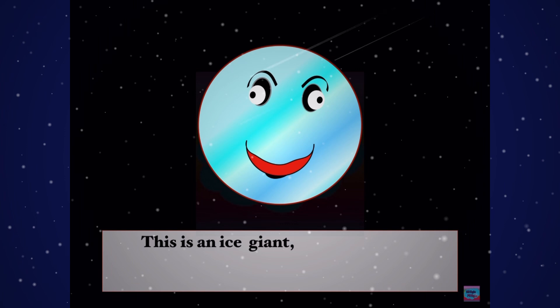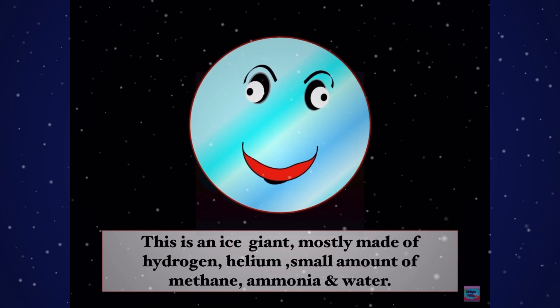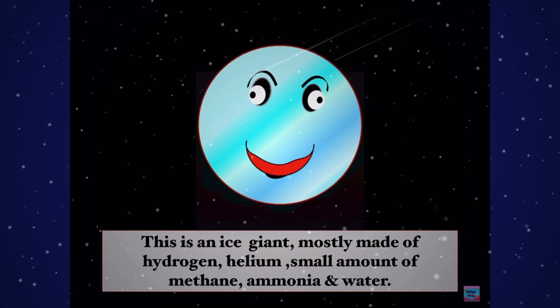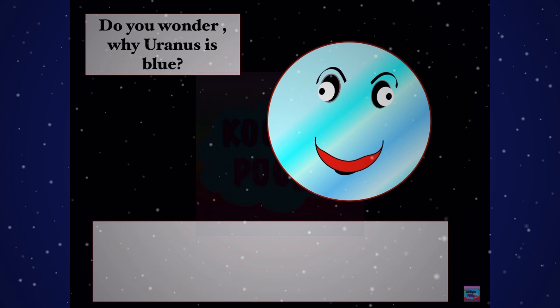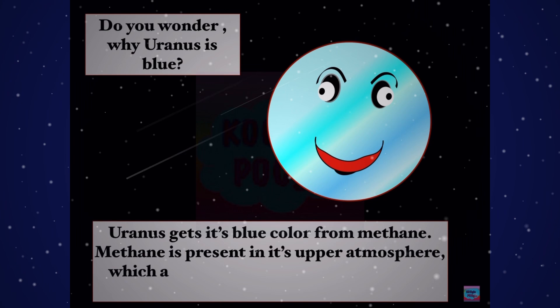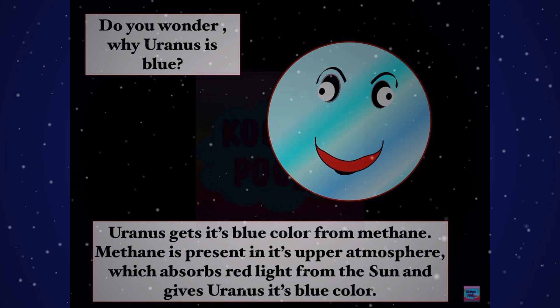This is an ice giant, mostly made of hydrogen, helium, and small amounts of methane, ammonia, and water. Methane is present in its upper atmosphere, which absorbs red light from the Sun and gives Uranus its blue color.